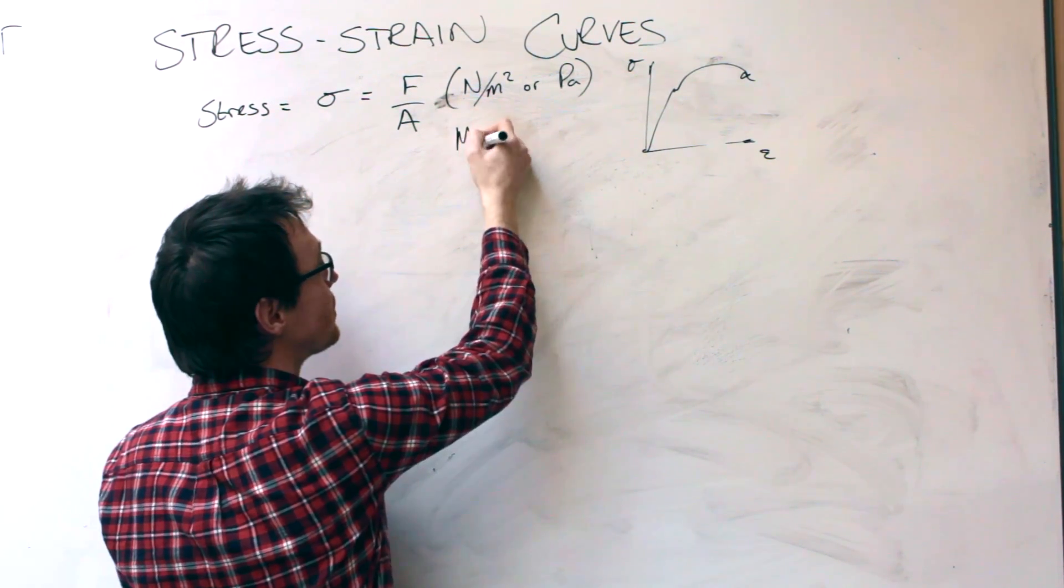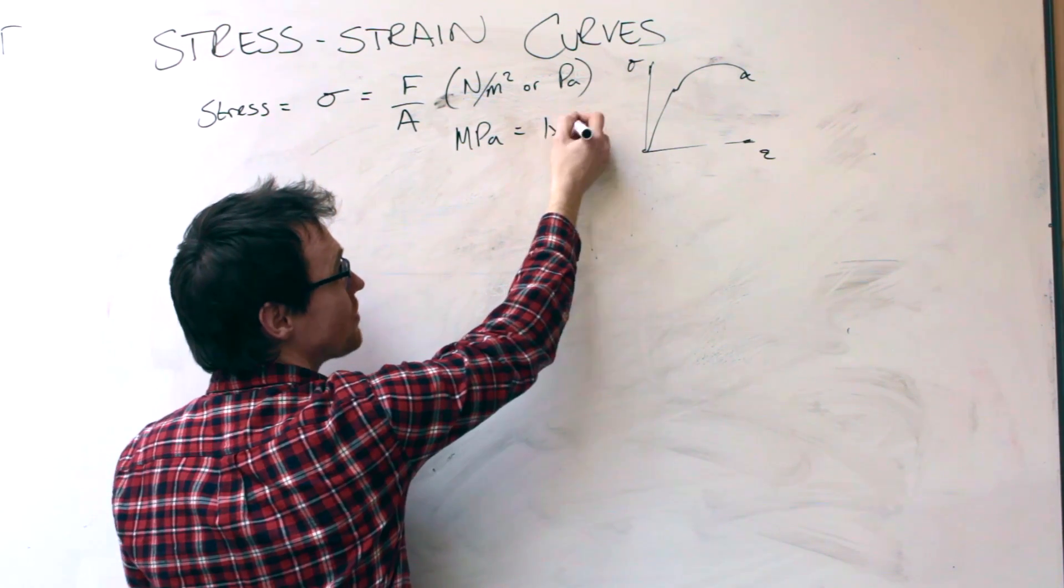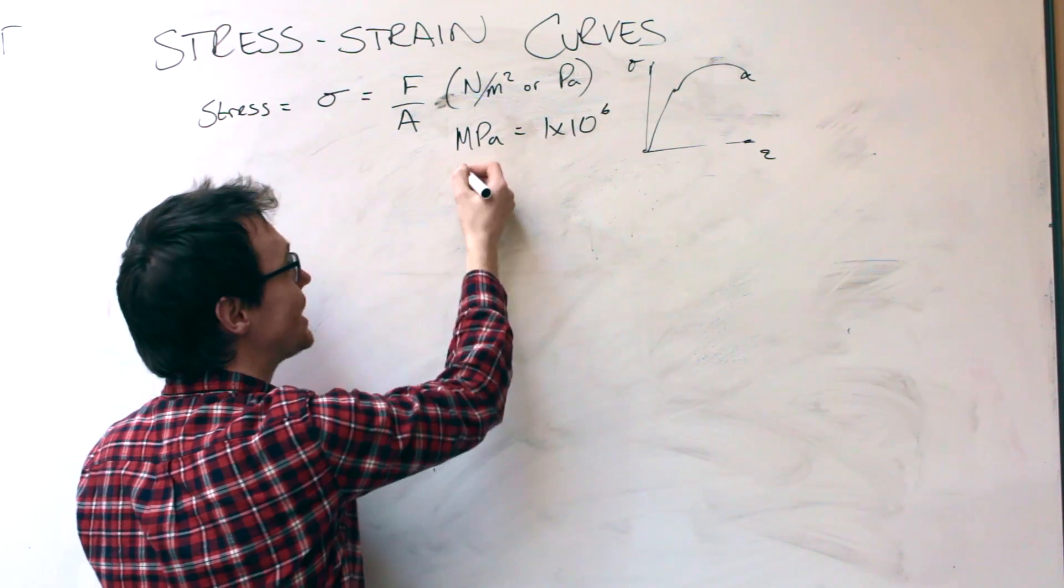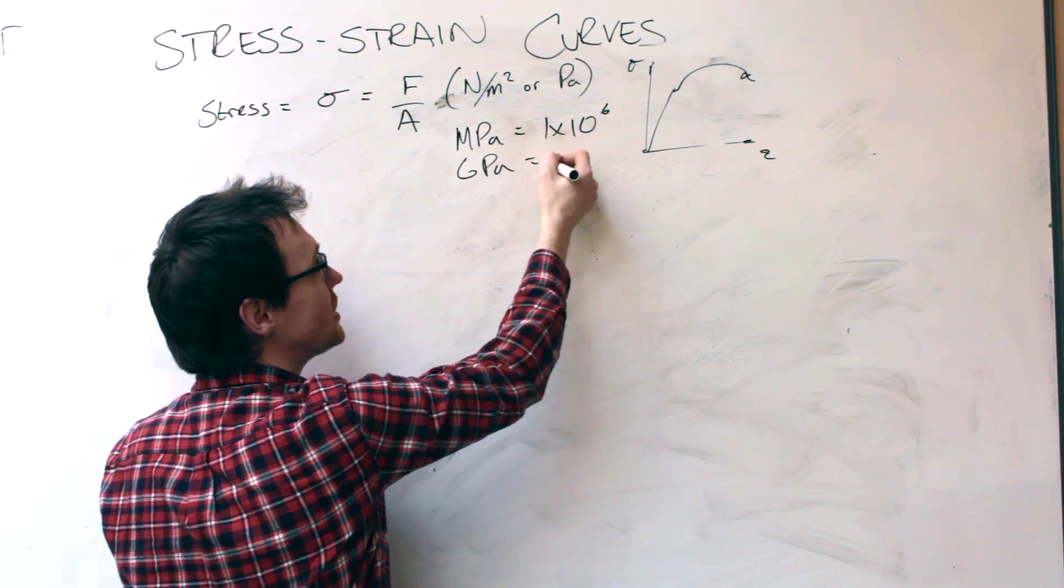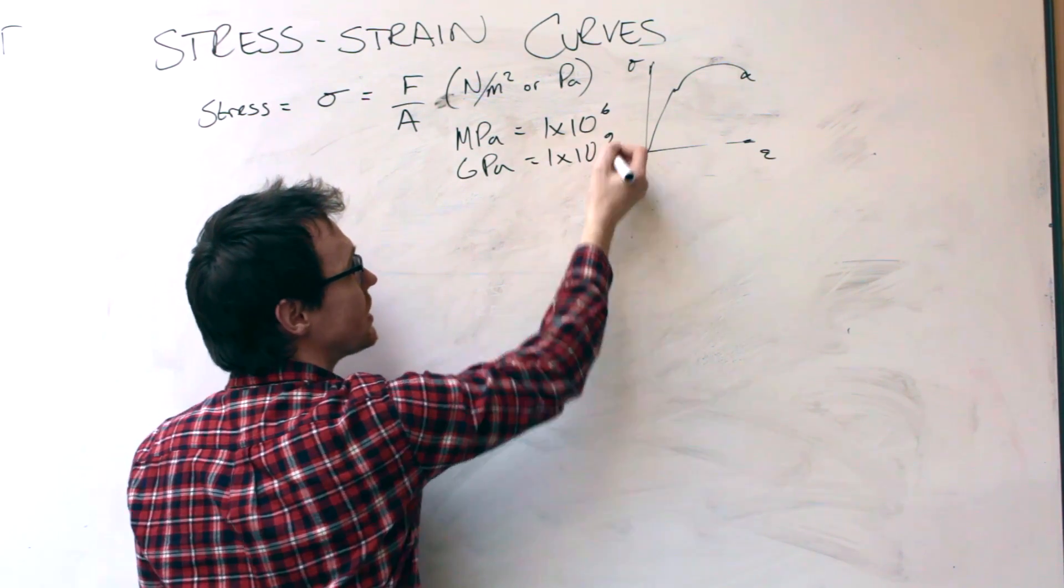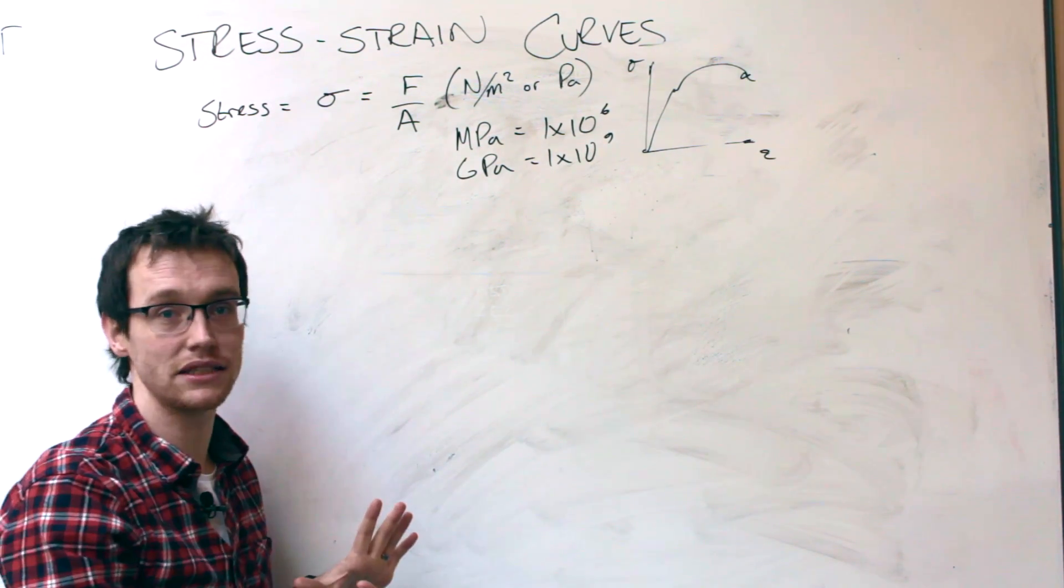Just a point of reference. A megapascal is equal to 1 times 10 to the 6 Pascals. A gigapascal is 1 times 10 to the 9. In other words, 1 with 10 nines after it.